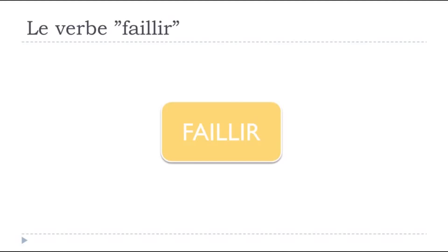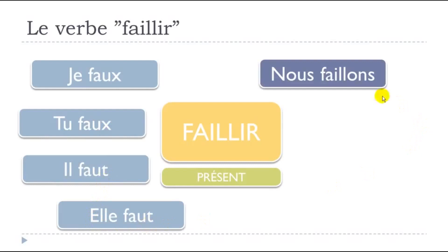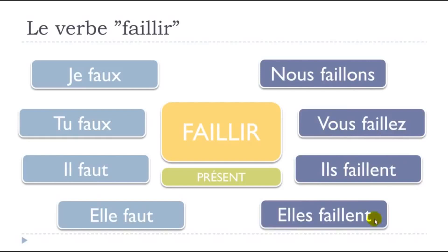So faillir at the present form goes like: je faux, tu faux, il faut, elle faut, nous faillons, vous faillez, ils faillent, elles faillent.